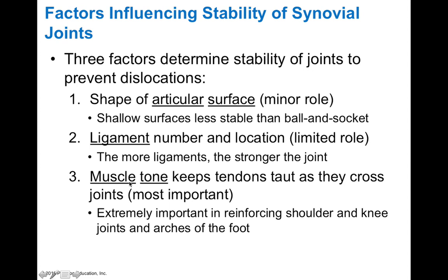Muscle tone is the most important component for joint stability. Muscle tone — different from popular usage — is a resting amount of muscle tension that your muscles produce. Your muscles are always in a state of contraction even when you think they're relaxed. This muscle tone produces a steady-state tension on tendons, keeping them taut as they cross joints and helping keep bones in normal position. If you lose muscle tone, joints can subluxate, or become partially dislocated.